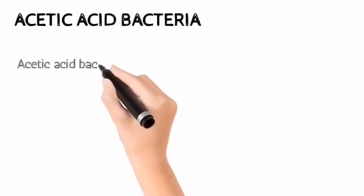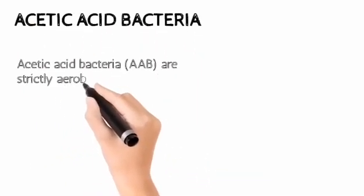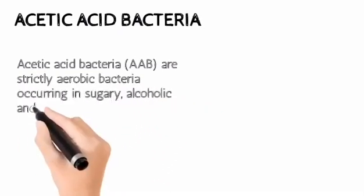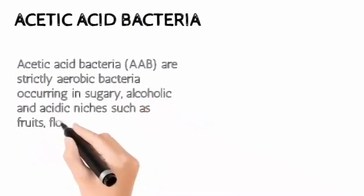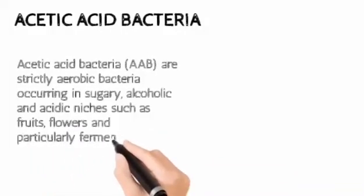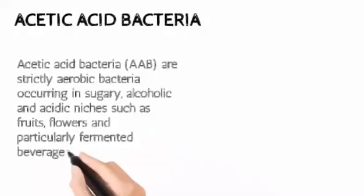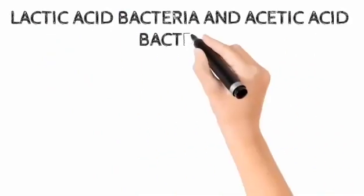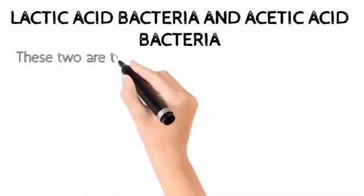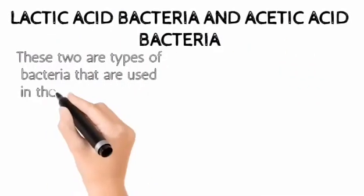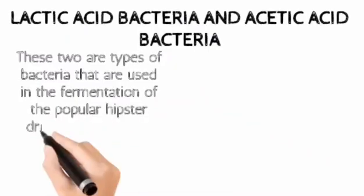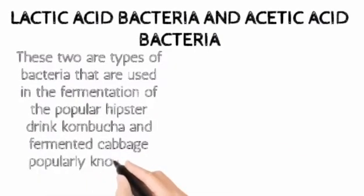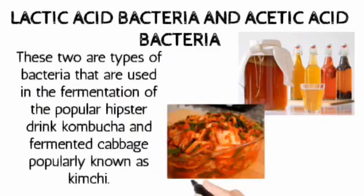Acetic acid bacteria are strictly aerobic bacteria that occur in sugary, alcoholic, and acidic niches such as fruits, flowers, and particularly fermented beverages. These two are types of bacteria used in fermentation of the popular drink kombucha and fermented cabbage, popularly known as kimchi.